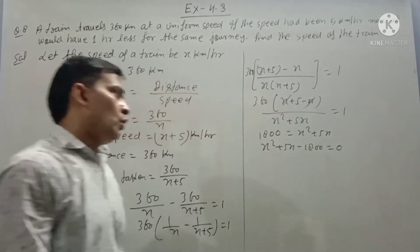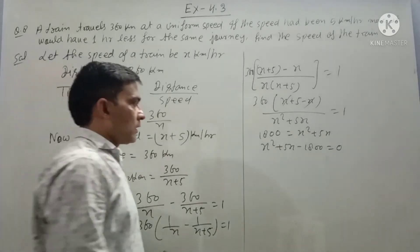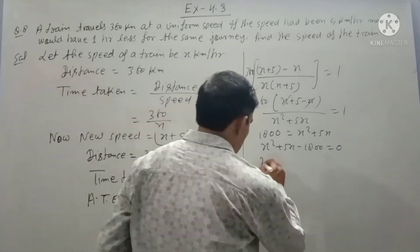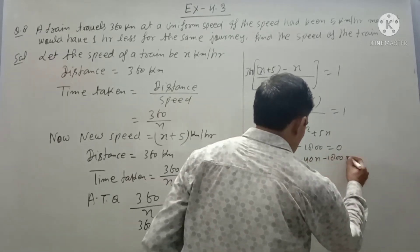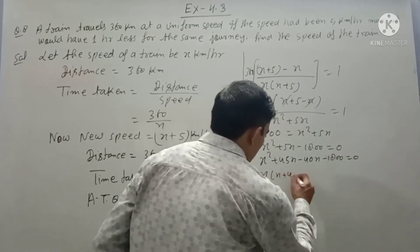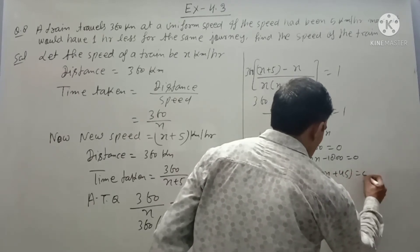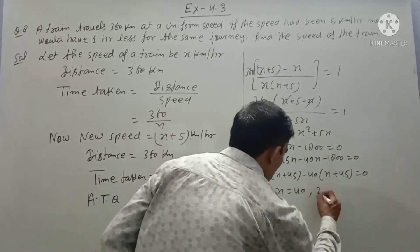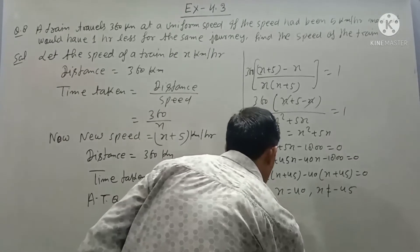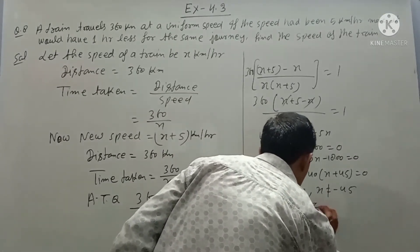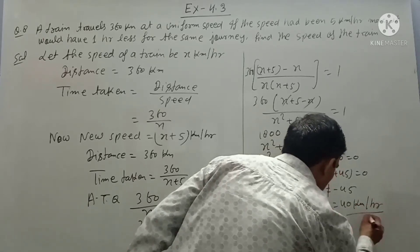Factoring: x squared plus 45x minus 40x minus 1800 equals zero. So x(x plus 45) minus 40(x plus 45) equals zero. Therefore x equals 40 or x equals minus 45. Since speed cannot be negative, x equals 40. The speed of the train is 40 km per hour.